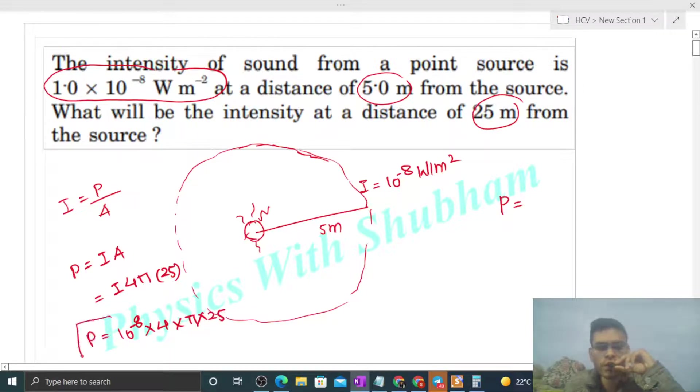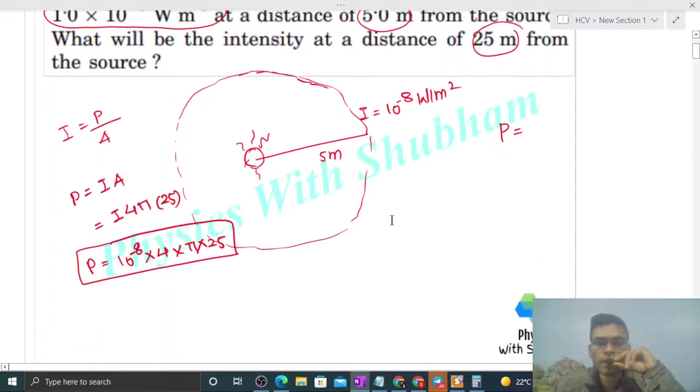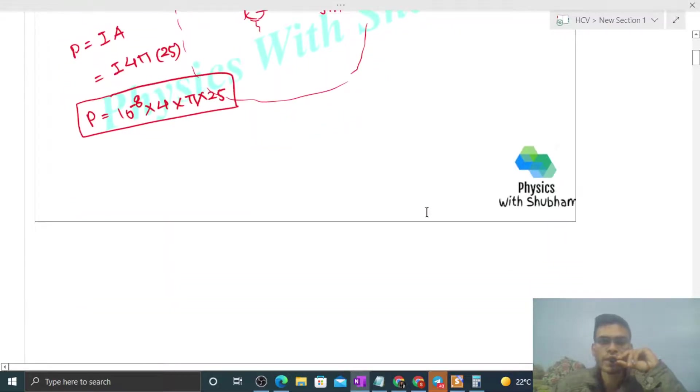So this is the power of the point source. Now what we have to find out is at 25 meters, at 25 meters distance, what will be the intensity? So again, intensity will be simply power divided by area.